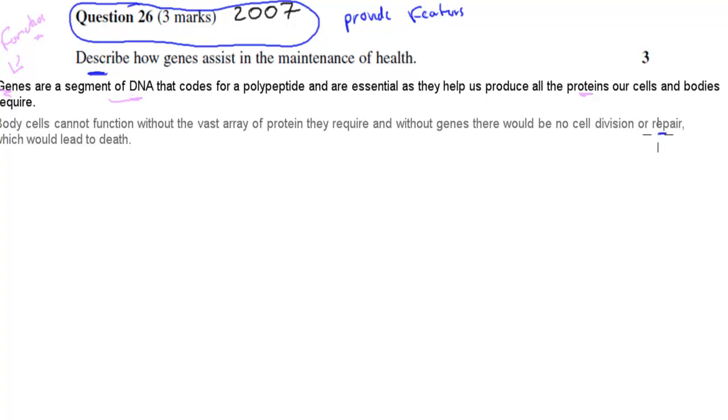Cells can't repair themselves which would mean death in general. This gene repair part - there's obviously a protein, an enzyme, that repairs the actual cell. But what I'm saying here is these body cells, our cells cannot function without proteins because they are absolutely essential for their normal function. And genes code for these proteins which means without genes there would be death.